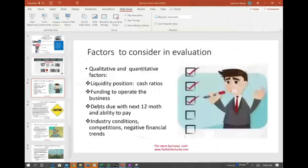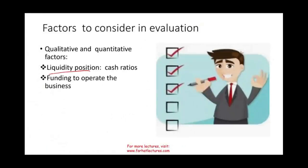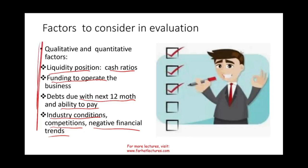Here are the factors that we take into account before we decide whether a company is a going concern. There are qualitative and quantitative factors: liquidity position, cash position, funding to operate the business, debt due in the next 12 months and ability to pay, industry condition, competition, and negative financial trends. Let's see how many of these factors apply to the Norwegian Cruise Line — this is what you need to know on your exam.